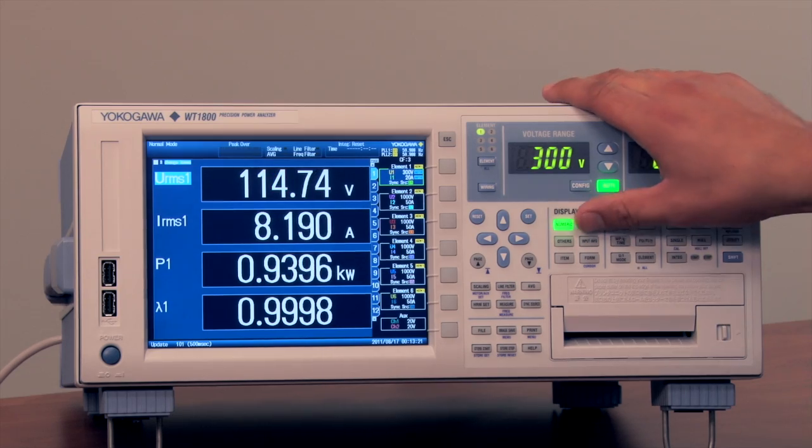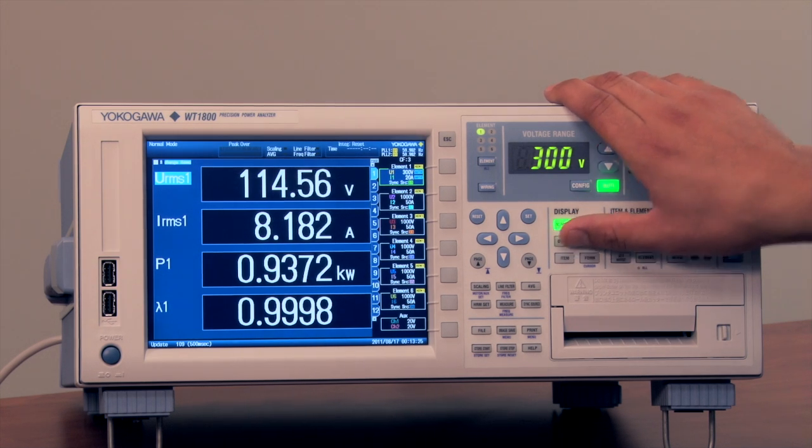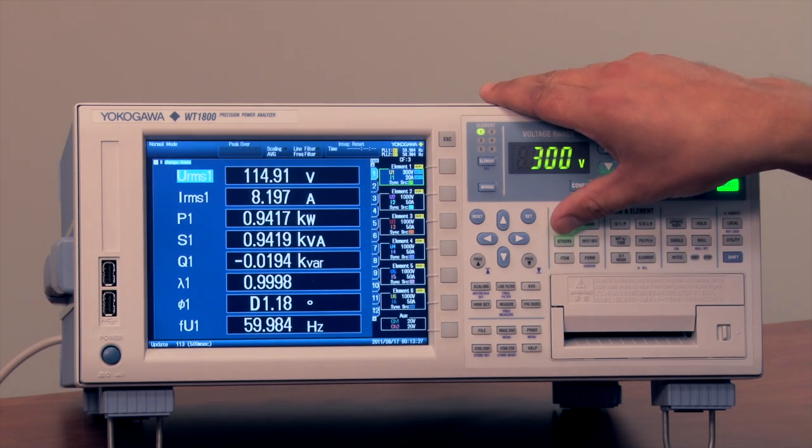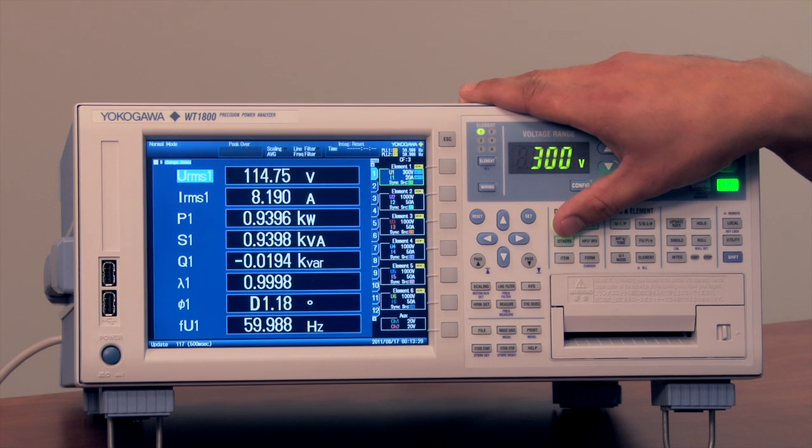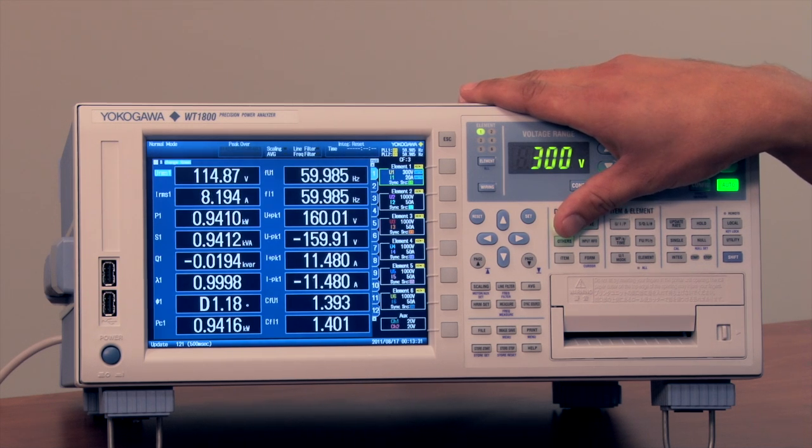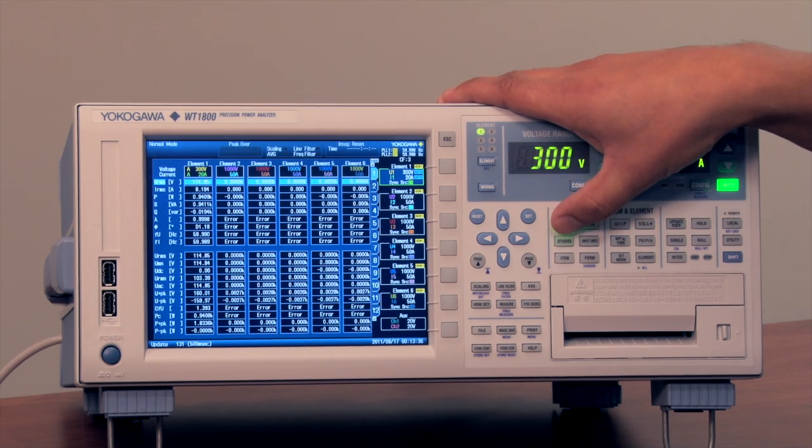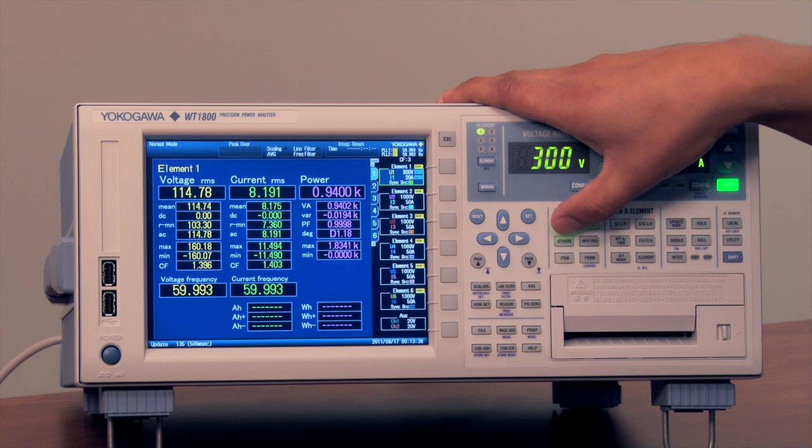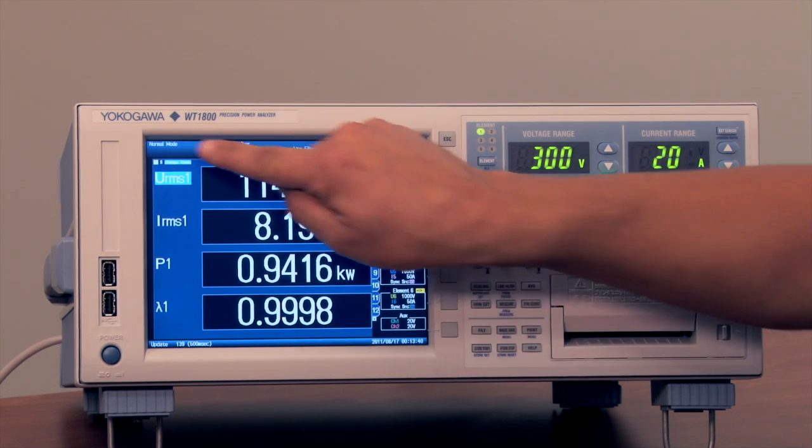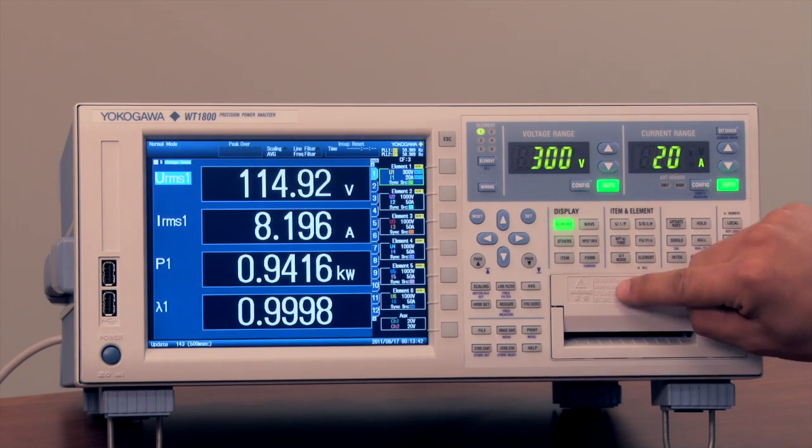You have the choice of looking at numeric values, waveforms, or a variety of different other features. As far as numeric values, you can change the number of values and for what elements you want to view measurements for just by simply hitting this numeric key and cycling through the various different displays. If you wanted to change any of these items you can easily use the quick set keys.